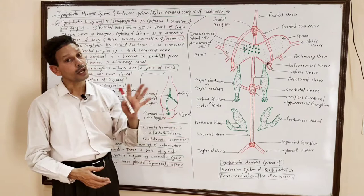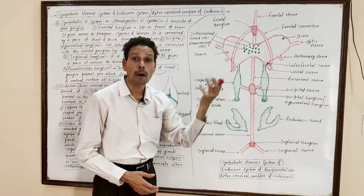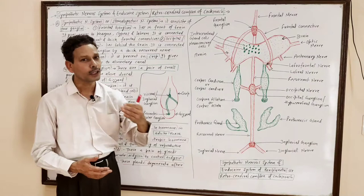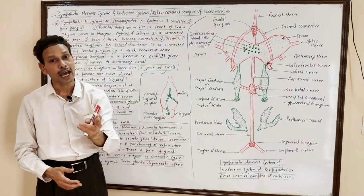The second important topic is the Endocrine System, or hormonal system. This system produces a complex just behind the brain, so it is named the Retro Cerebral Complex. The name 'retro cerebral' indicates that a complex develops just behind the brain, forming the Retro Cerebral Endocrine System.